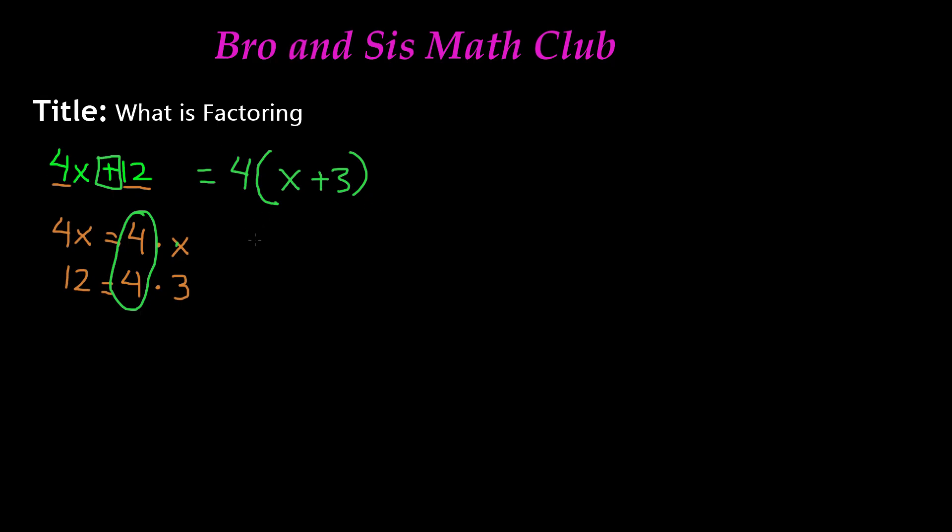And so if I actually do apply the distributive property on this, I know that I have to distribute the number 4 to x and I need to distribute it to 3. So I know that 4 times x is 4x, and then 4 times 3 is 12, and positive, positive make a positive. So I have 4x plus 12, which is the same thing as 4x plus 12.